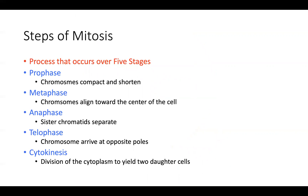There are five stages of mitosis. The acronym to help remember them is PMAT: prophase, metaphase, anaphase, telophase, and then finally cytokinesis.